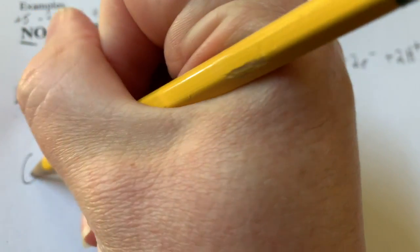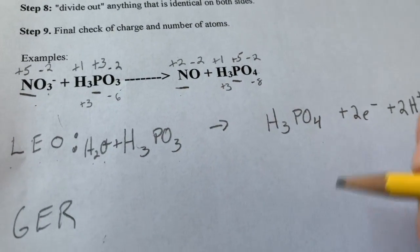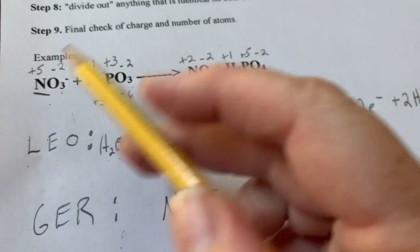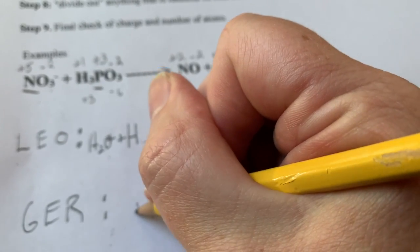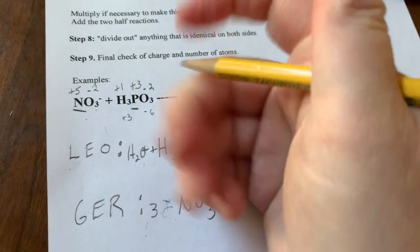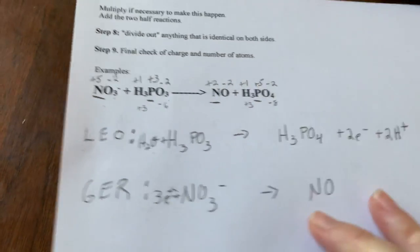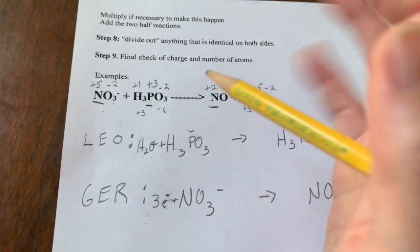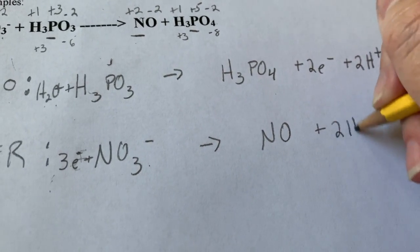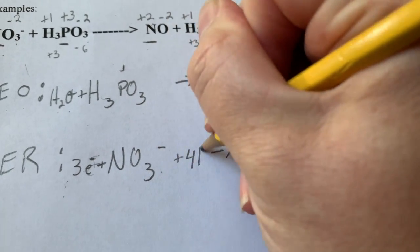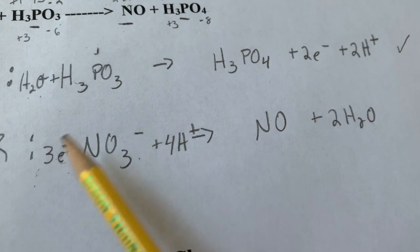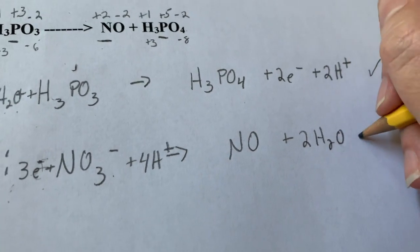My next half reaction is my GER side, my gaining electrons. Well, who gained electrons? Nitrogen did. Nitrogen went from NO3- to NO. And remember it went from plus five to plus two. So I gained three electrons, right? I became, or I ended up getting three more electrons in order to change that oxidation number. Once you've done that, your nitrogens are the same. So you didn't need to worry about that. You're now going to go ahead and balance out those oxygens. So I have three oxygens on the left. I only have one on the right. So I'm going to have to go 2H2O, then my hydrogens. And so I'm going to go plus 4H+. I'm going to check my charges. See if that works out. I have a negative three from the electrons. I have a negative one from nitrate. That's giving me negative four and positive four. So that's a zero. And then everything there is a zero.